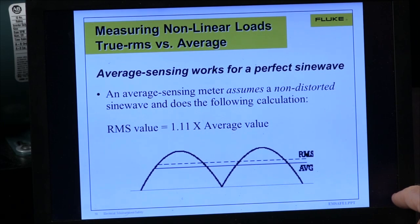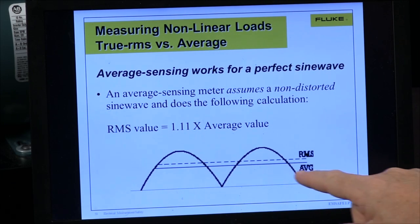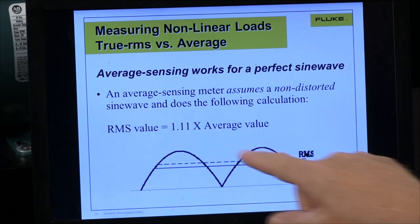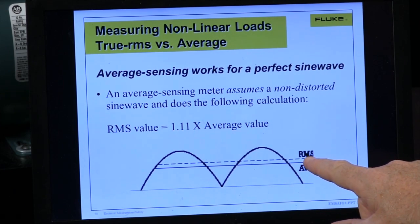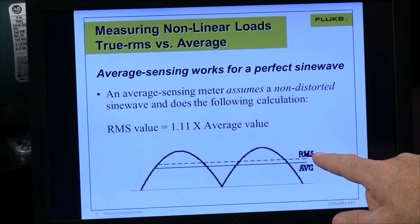If we use an average responding meter, what it does is it takes the average of a signal, multiplies it by 1.111, and then displays the RMS. So it's actually average sensing RMS display.